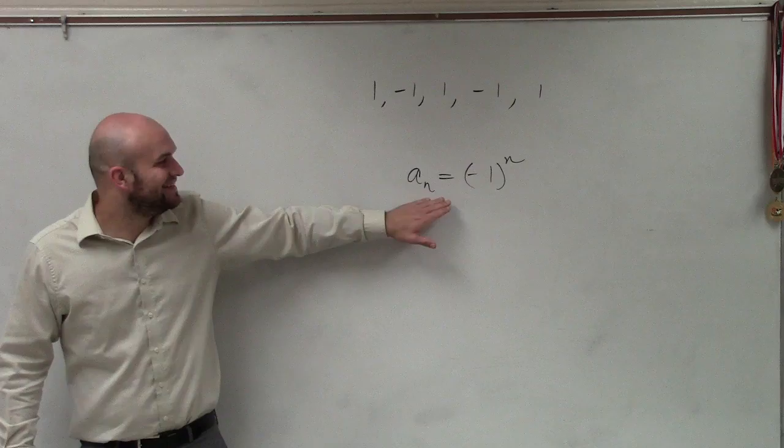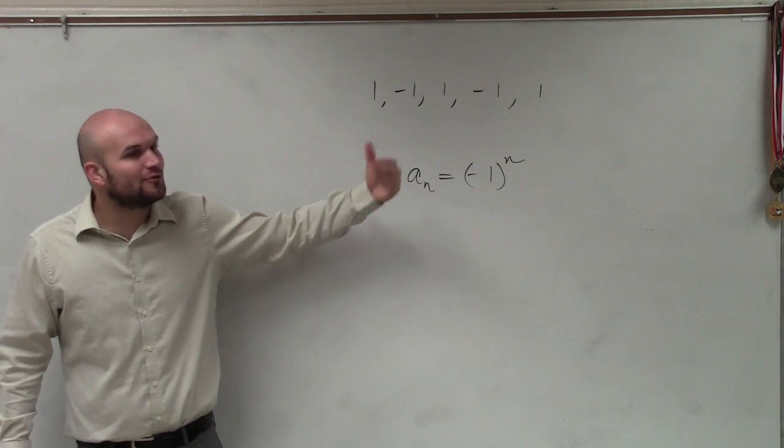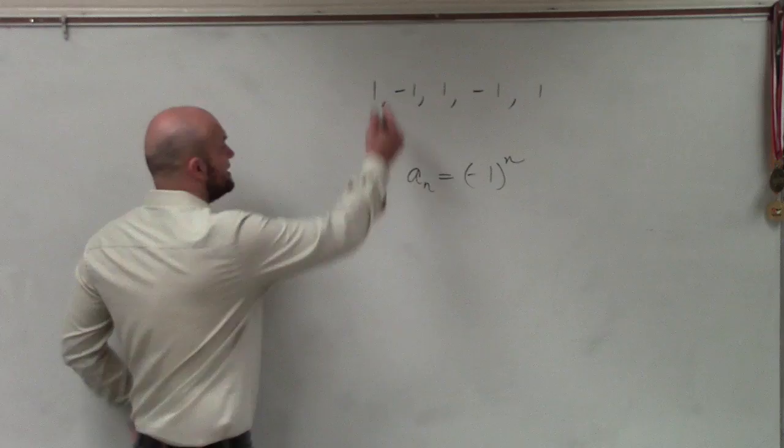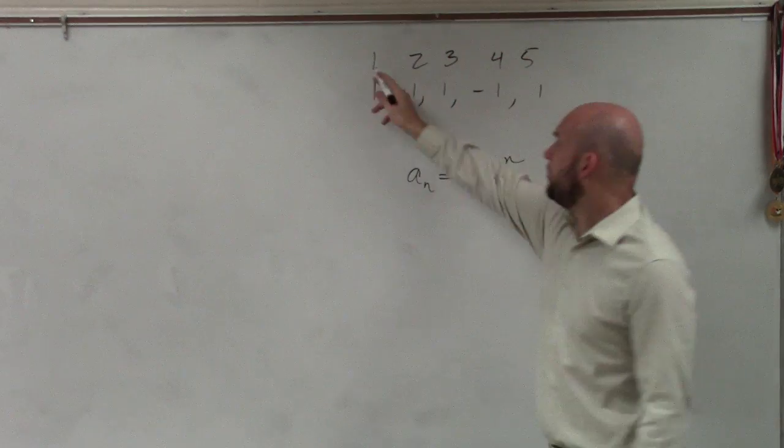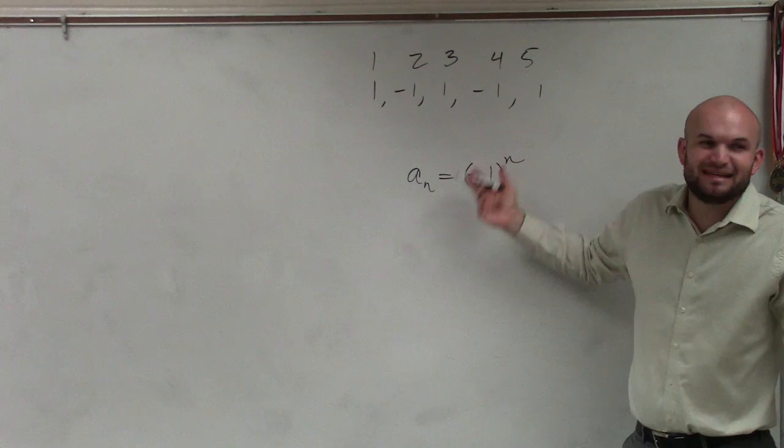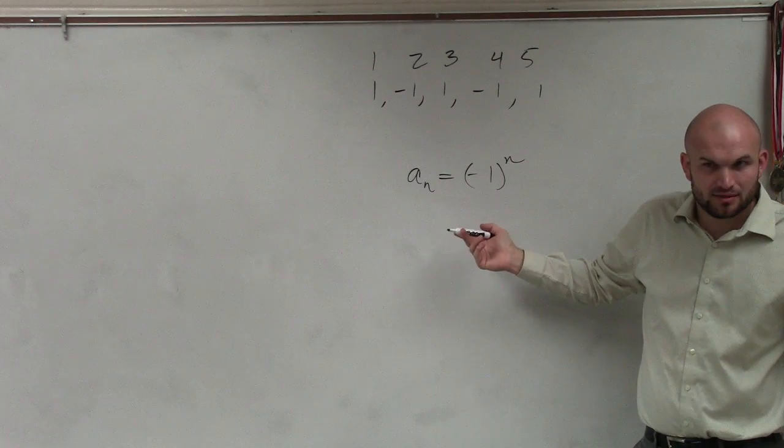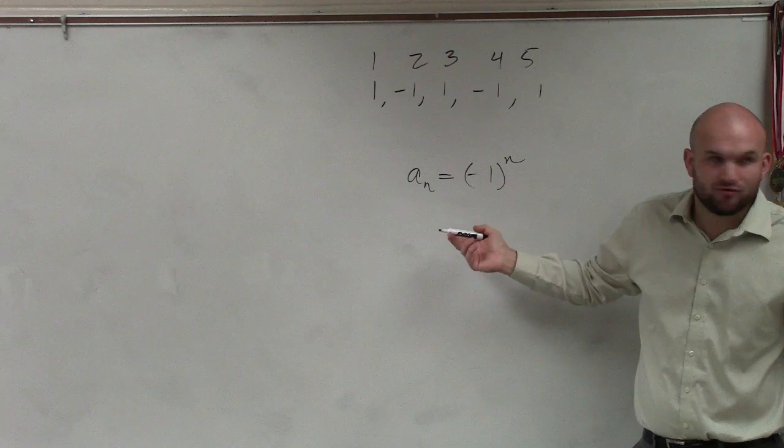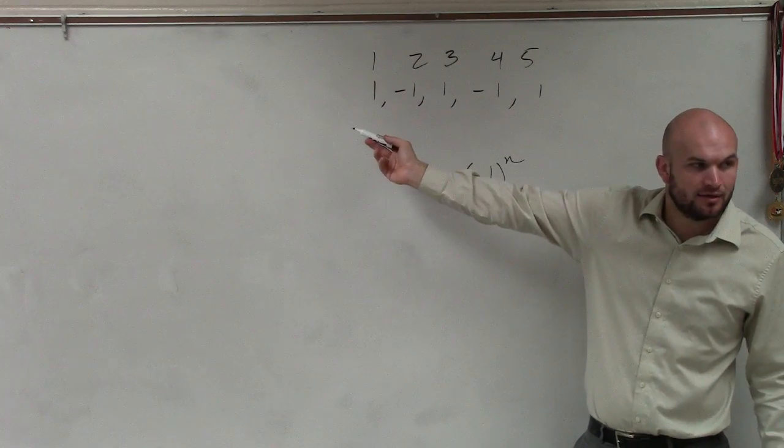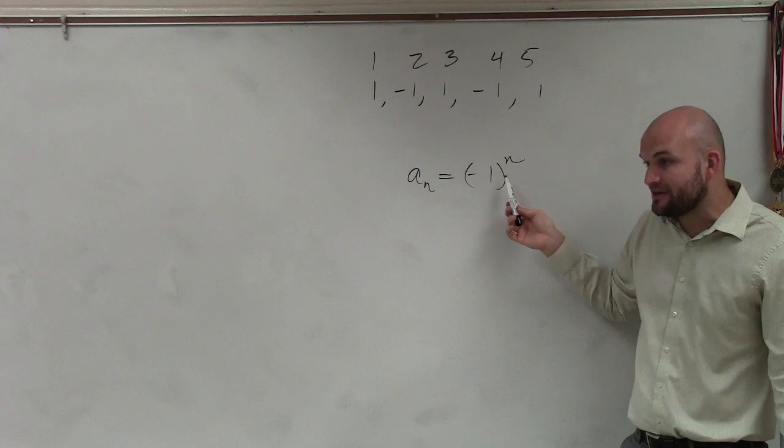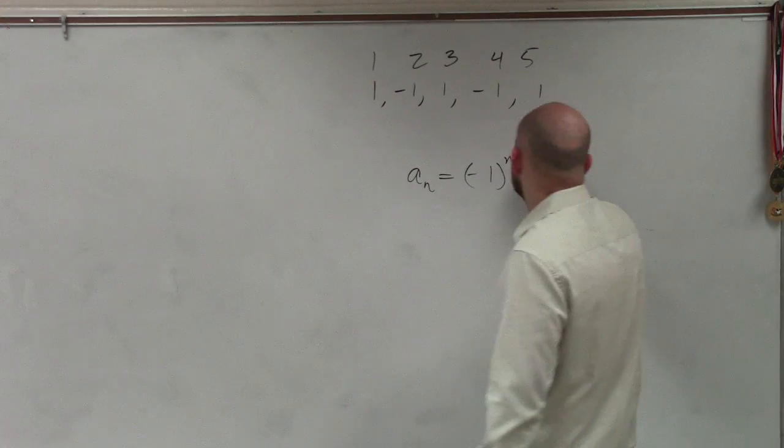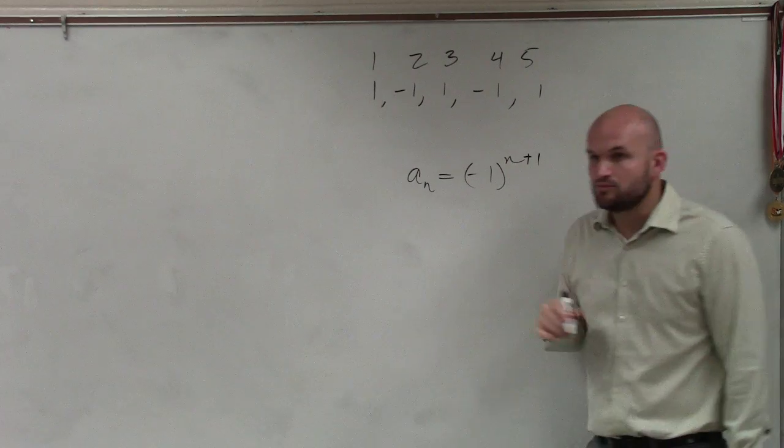So, if you have a_n equals negative 1 raised to n. Now, remember, we're writing in on these terms. So, when I plug a 1 in for here, that's going to give me negative 1. Right? I don't want negative 1. I need to get back a 1. So, therefore, this number needs to be even for it to produce an even number. So, what about if I just did plus 1?